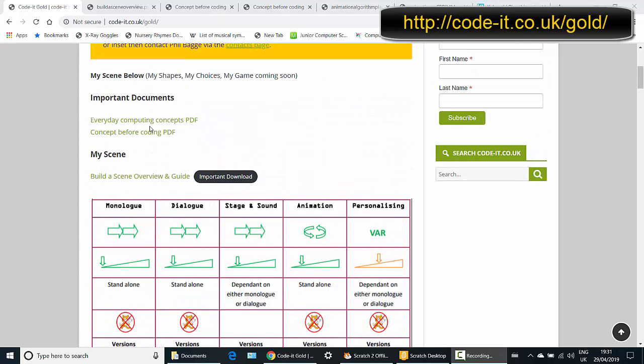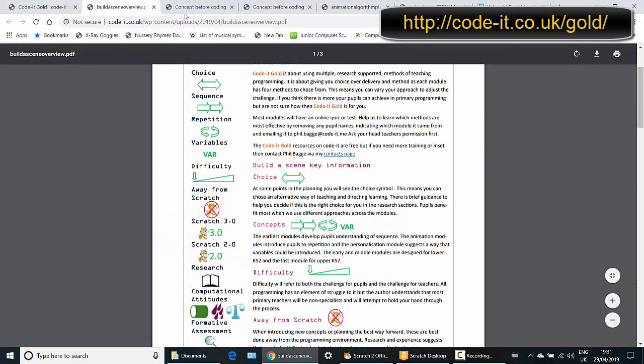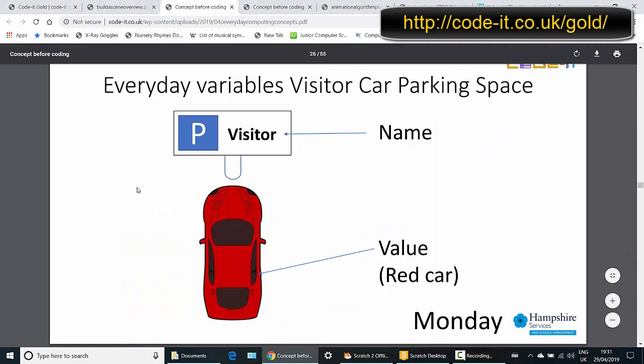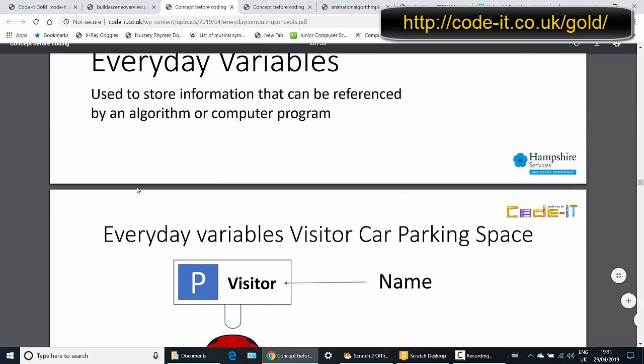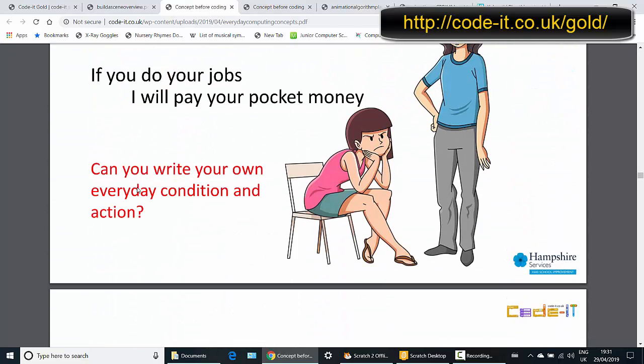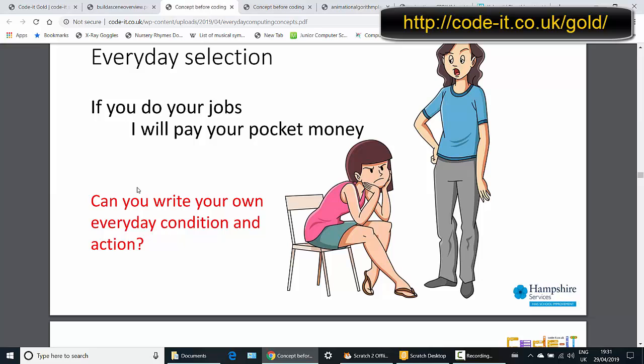Every project also has links to where something exists in the everyday world. So if we're introducing sequence or repetition or selection, we go straight into showing you some of these ideas in the everyday world. We're getting children to think about those things before we actually get into code so that they get a link to their existing knowledge.